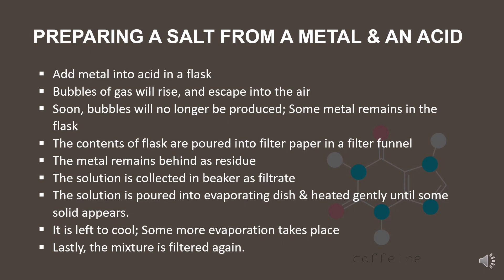Step 4: The contents of the flask are poured into filter paper in a filter funnel. Step 5: The metal remains behind as residue. Step 6: The solution is collected in a beaker as filtrate. Step 7: The solution is poured into an evaporating dish and heated gently until some solid appears. Step 8: It is left to cool, and some more evaporation takes place.